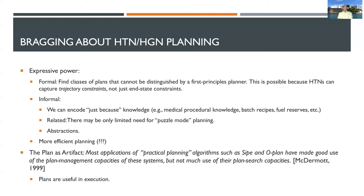For example, a robot that is traversing the countryside — when doing it for exploration, may use its camera in one way, whereas when just trying to go from point A to point B, it might use the camera in an entirely different way. Another sample use is identifying which conditions need monitoring at runtime and finding the implications of plan failures and disturbances, as we do in our work on plan repair.